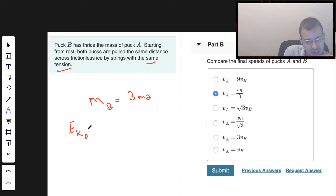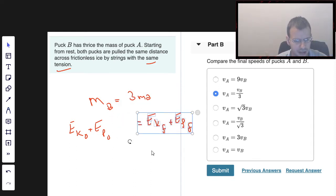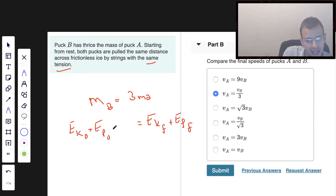Energy kinetic initial plus energy potential initial equals energy kinetic final plus energy potential final. And then I'm going to add in work on the left side here because we're going to add some work to it by having a tension, which is a force across a distance. We'll call it distance D.